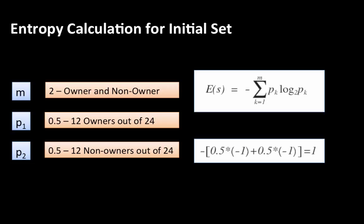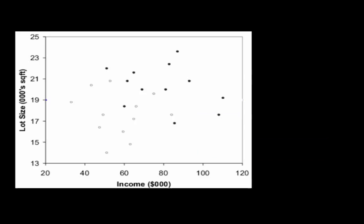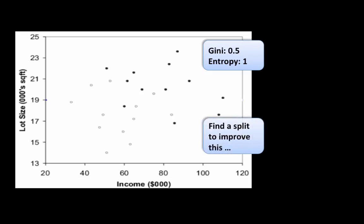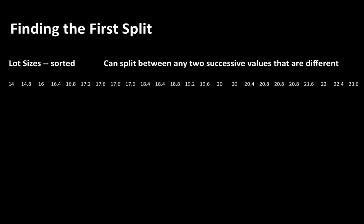You can use either the Gini index or entropy as a measure of impurity. In our original example, the initial set has 12 owners and 12 non-owners. The Gini index is 0.5 and the entropy is 1. Our goal is to find a split that improves upon this — splitting into two regions, each a lot purer than the combined set.